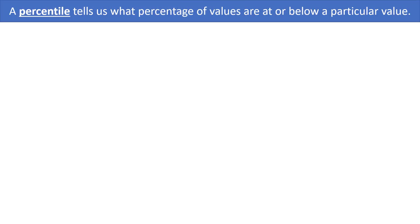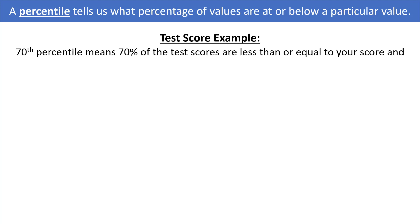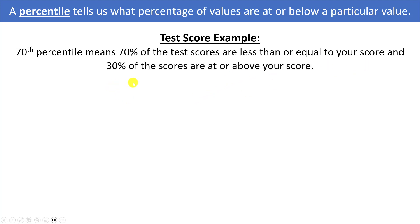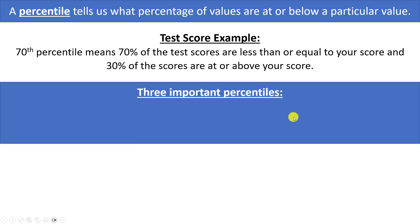A percentile tells us what percentage of values are at or below a particular value. You may have heard percentiles used in the context of test scores. If you are at the 70th percentile, that means that 70% of the test scores are less than or equal to your score, which also means 30% of the test scores are at or above your score.